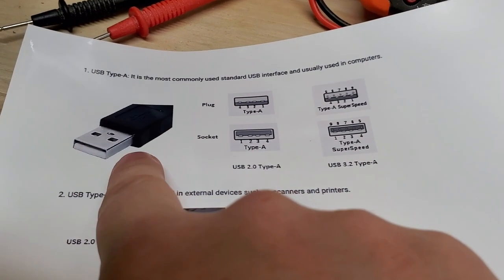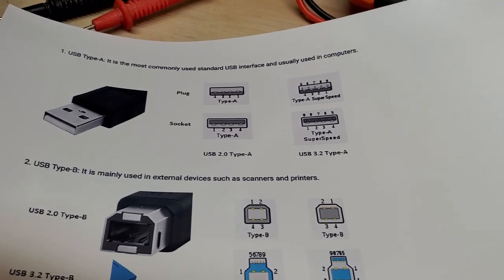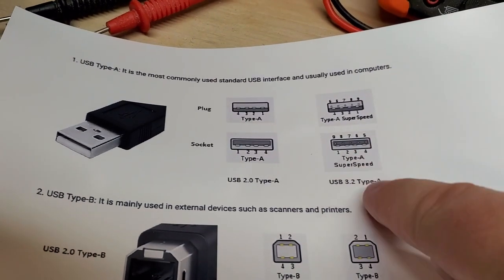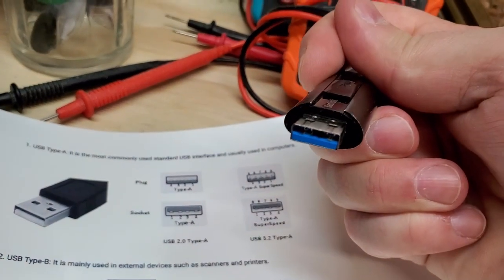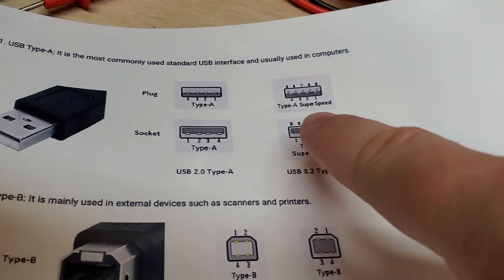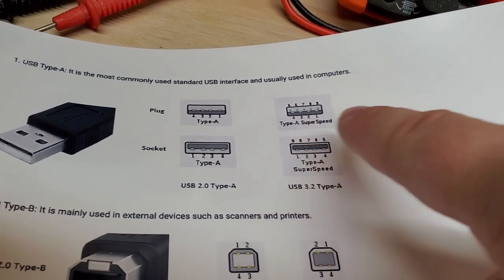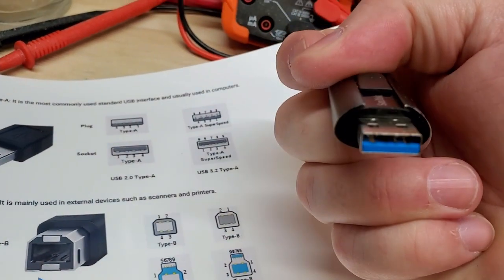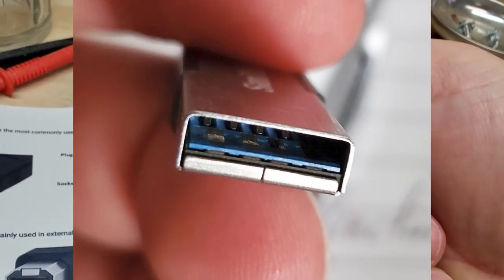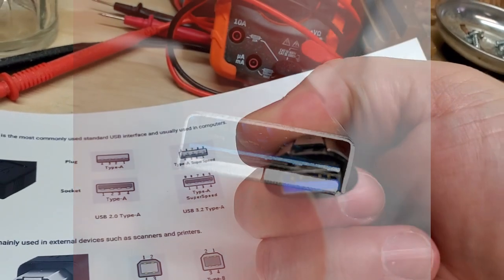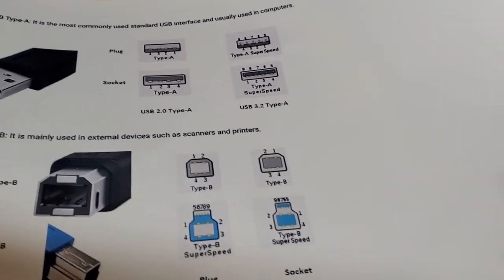USB-A originally had four pins, and then they came out with a faster version — USB 3.0, 3.1, 3.2 — which is blue. Inside the blue connector there are more pins; it's not just four, there are nine pins. You can't easily see the other ones — they're in the back. You can see the four prominent ones and if you tilt it a little bit you'll notice a bunch of extra pins in the back.